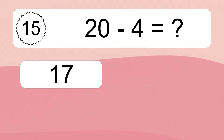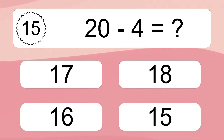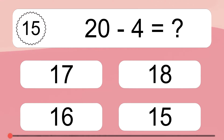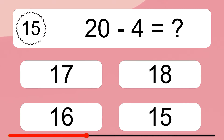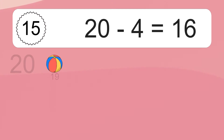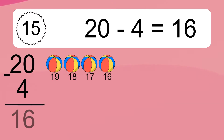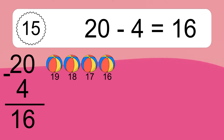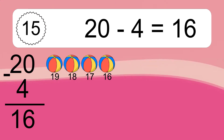20 minus 4 equals what? 20 minus 4 equals 16. Let's count it: 19, 18, 17, 16.